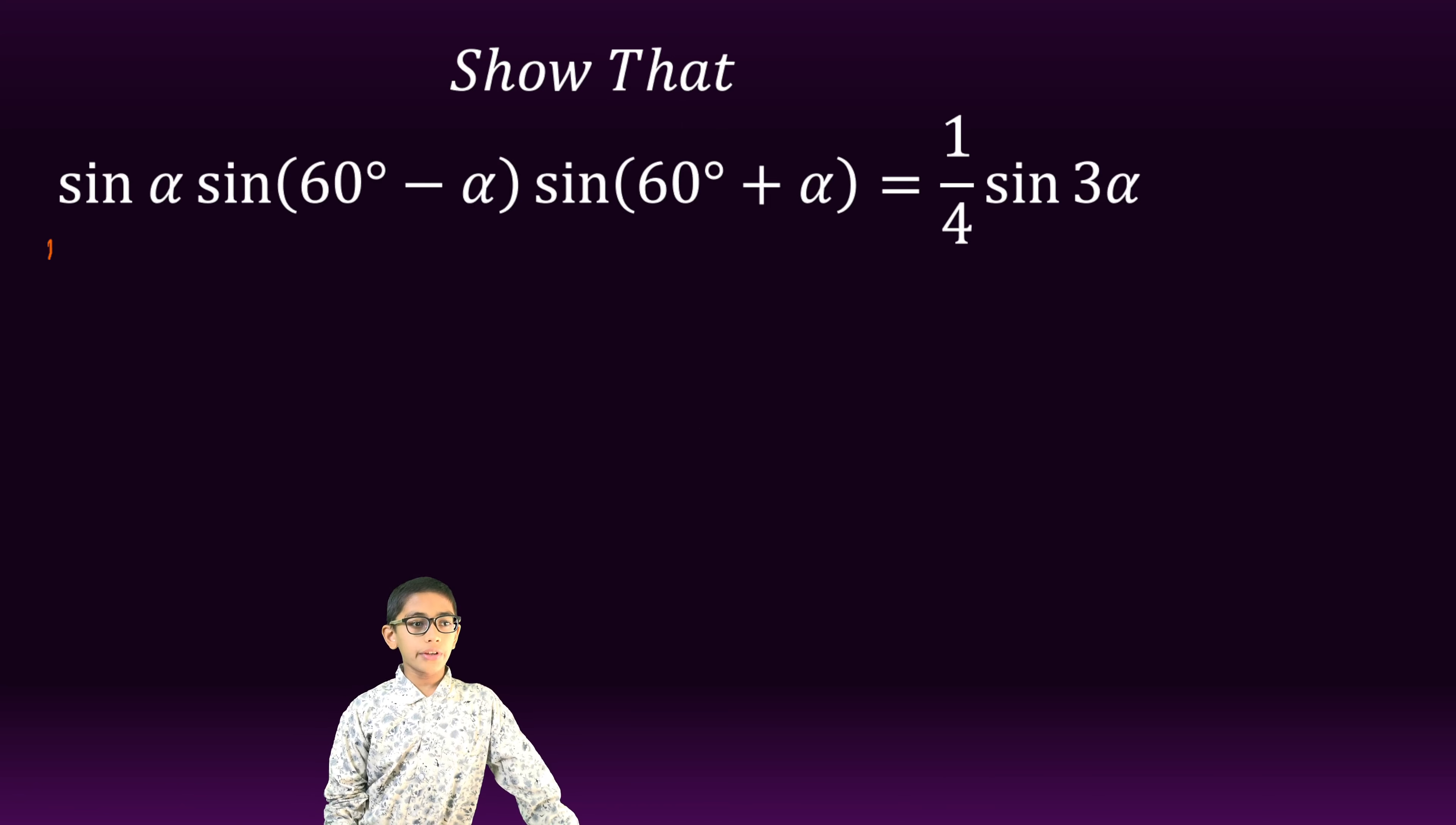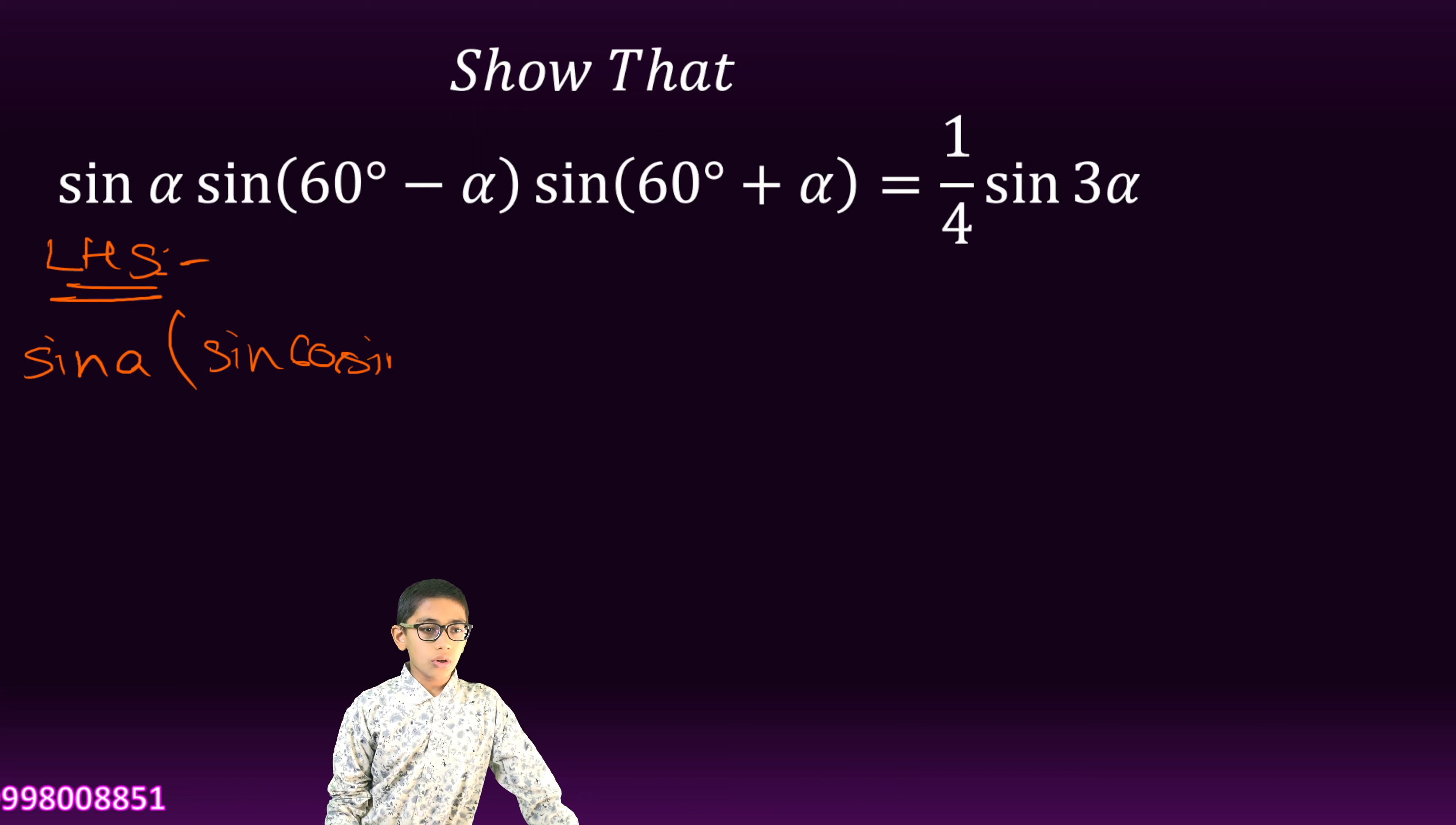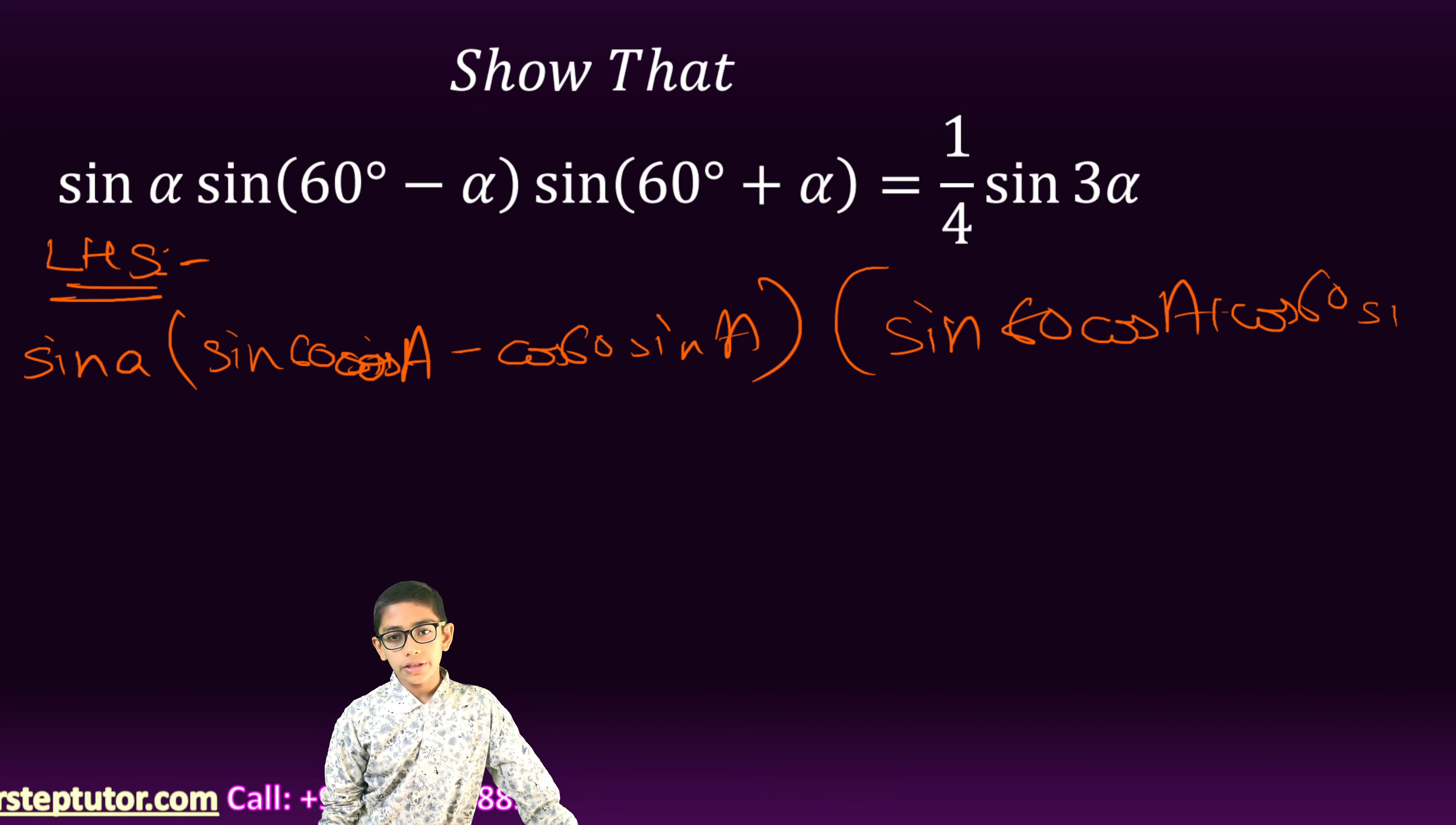So first we will solve the LHS, the left hand side. Sin A multiplied by sin 60 cos A minus cos 60 sin A multiplied by sin 60 cos A plus cos 60 sin A.